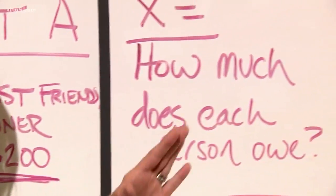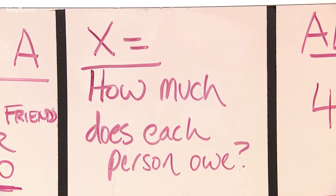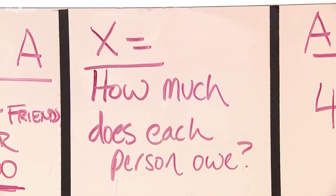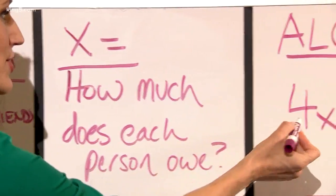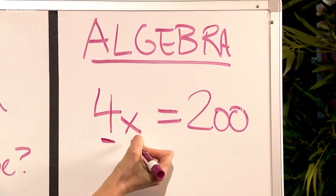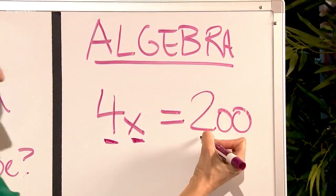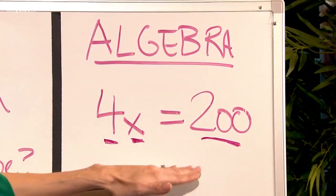X is always just what don't you know that you're trying to find out? How much does each person owe? Huh? X's, A's, no, I'm out. So there are four of you times however much you owe equals the bill. That's algebra, my friends.